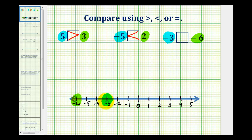Notice negative 3 is to the right of negative 6, which means negative 3 is greater than negative 6. Again, we can read these from right to left, meaning we can say negative 6 is less than negative 3.